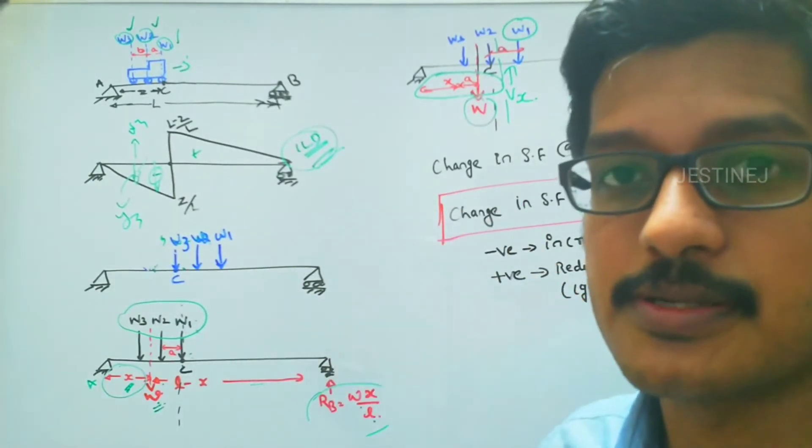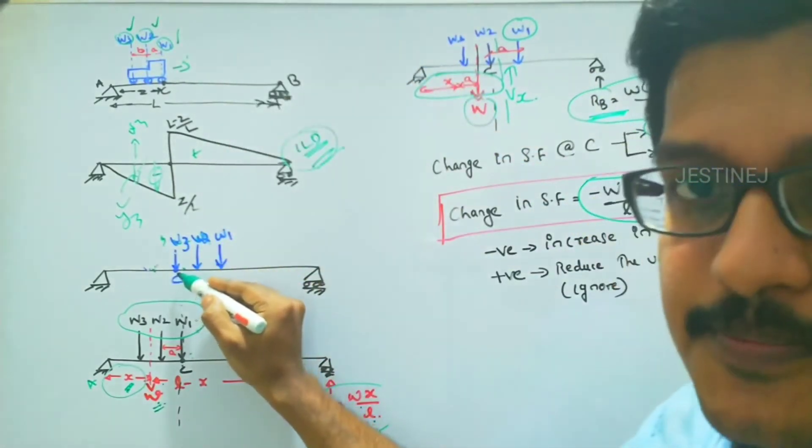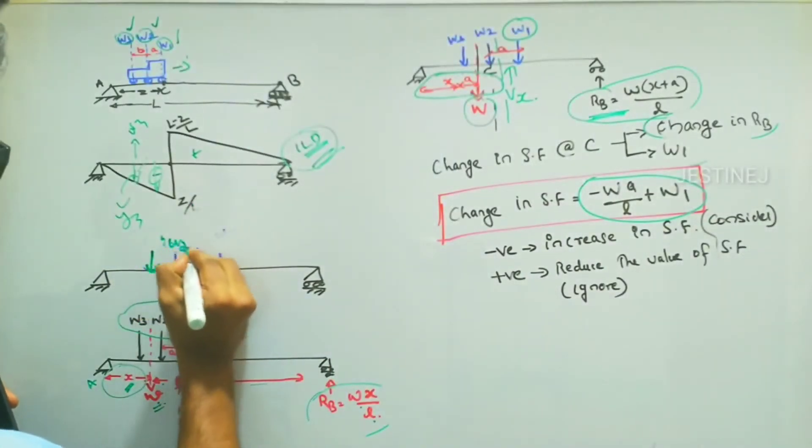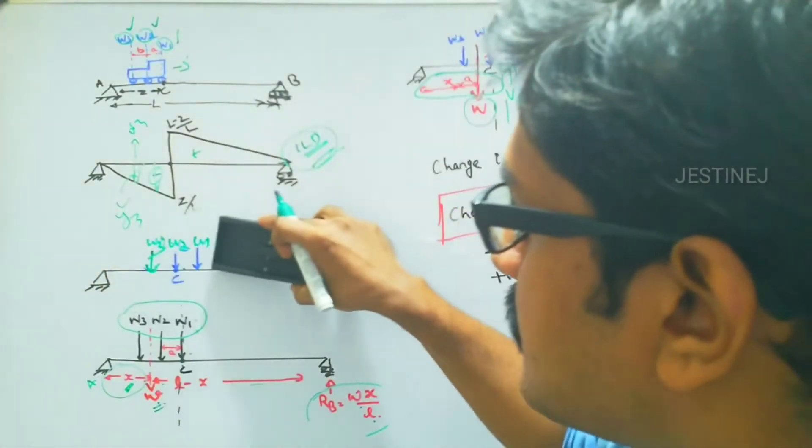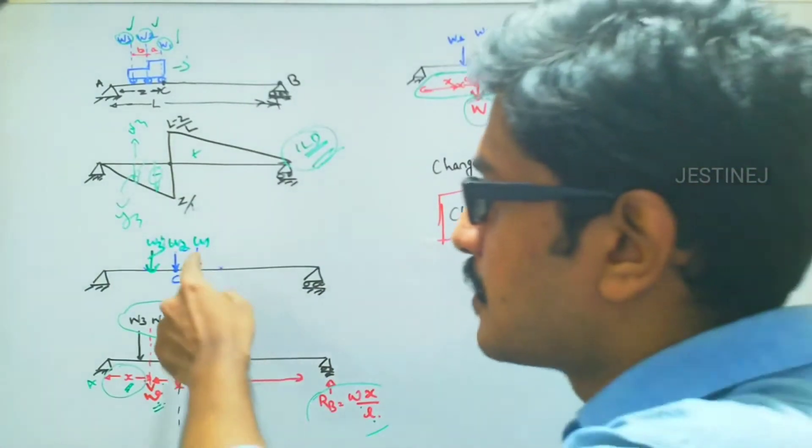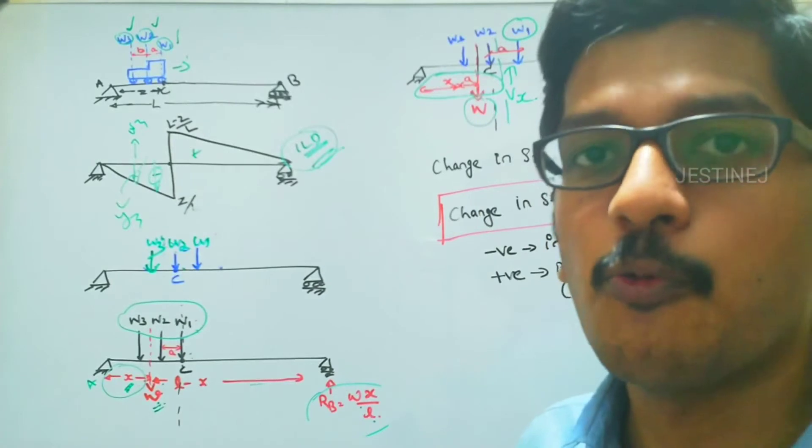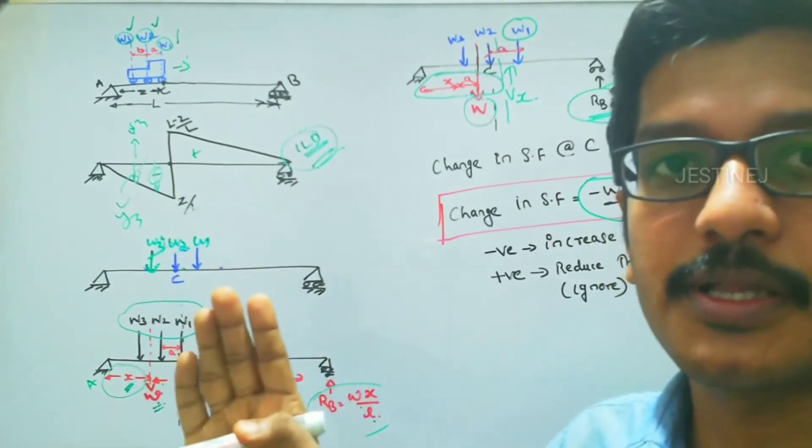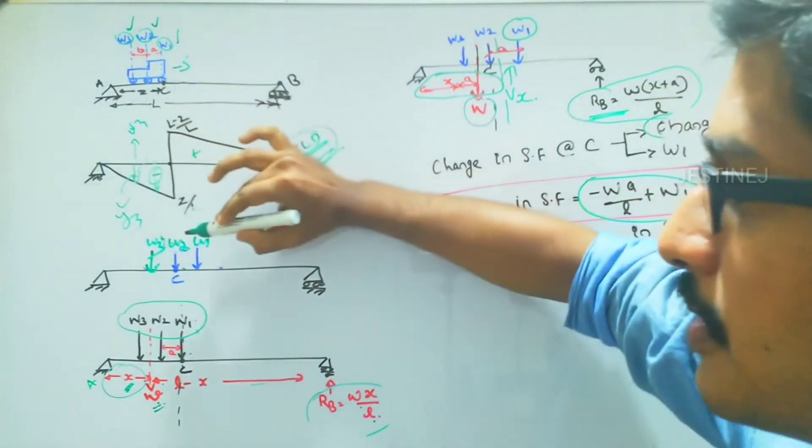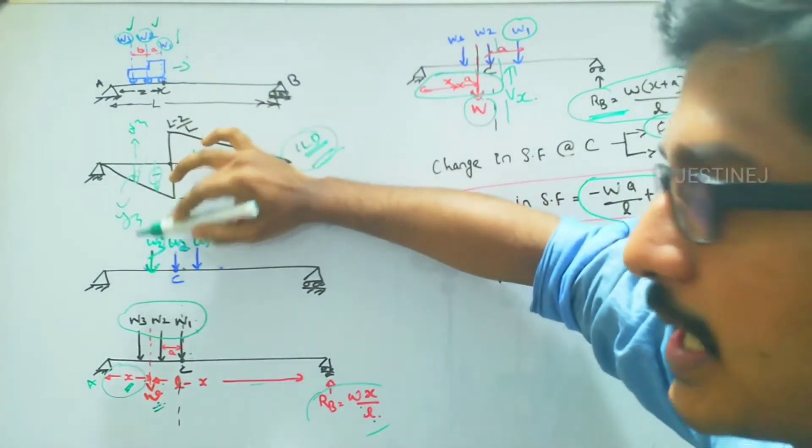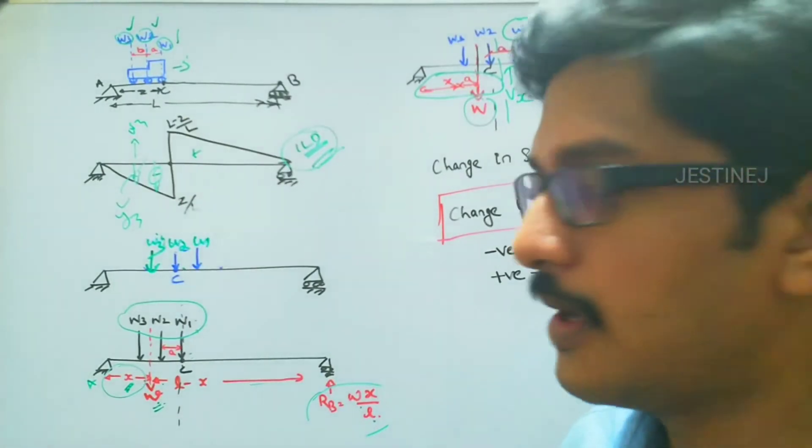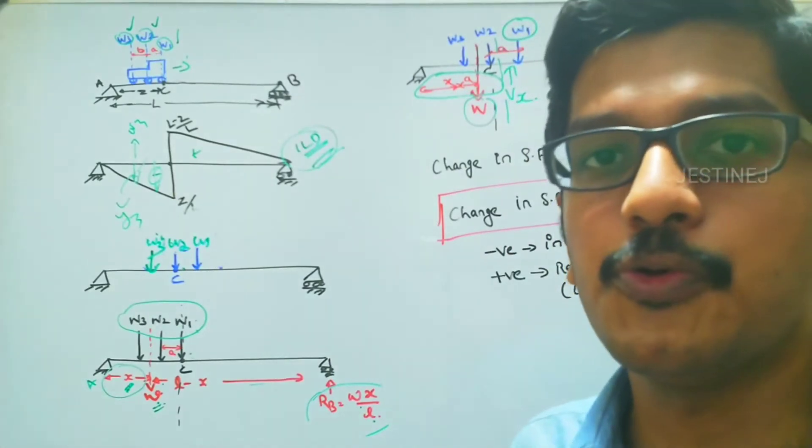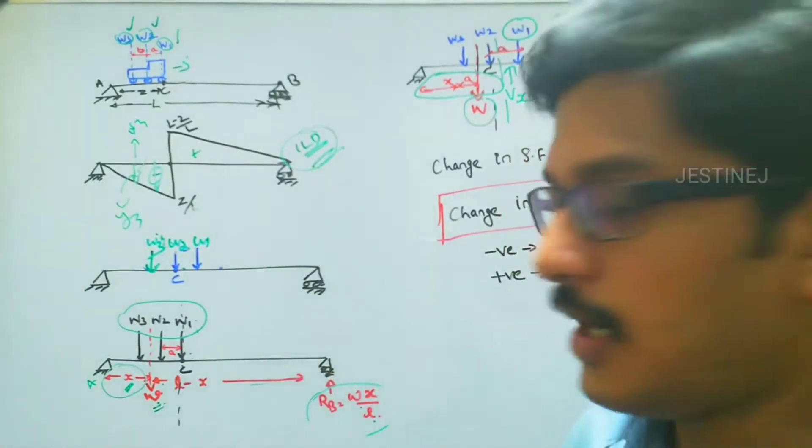So there are some situations: if W2 is acting over the point C, sometimes W2 will be giving the maximum shear force. So what is the condition for that? Either you can use trial and error method. If number of loads are there, five or six loads are acting, you have to find out after placing W2, then you have to place W3, likewise. That is one method. So here I am deriving an expression for how to easily calculate the value. Let us go to the derivation.